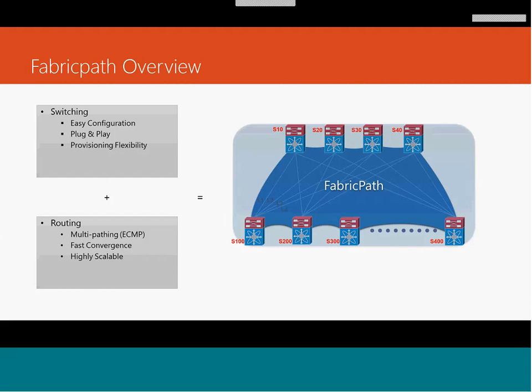FabricPath provides features of both layer two and layer three. Layer two benefits include plug-and-play, easy configuration, flexibility for provisioning VMs, and mobility across the data center. Routing principles give faster convergence, more scalability, and ECMP path features. FabricPath provides both. Its control plane runs based on layer two IS-IS — you don't need to configure it, it's all automatic — and it provides ECMP, so you will have multiple paths to route traffic to a particular location.